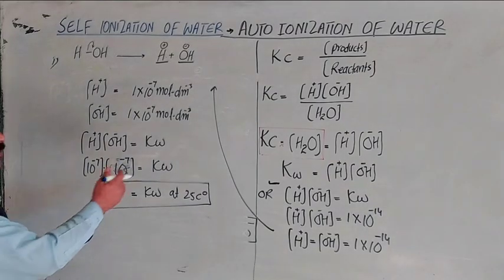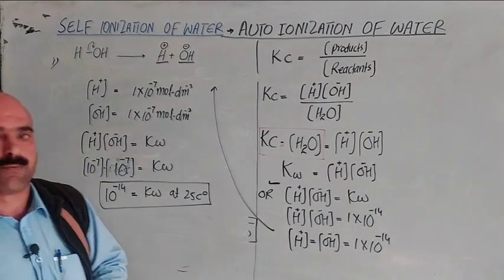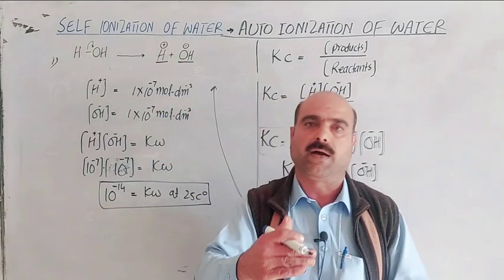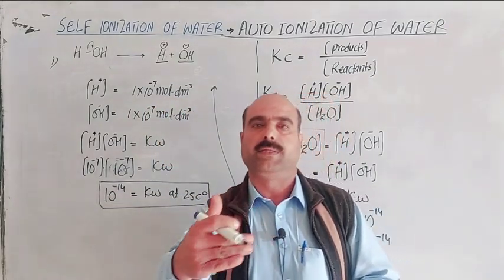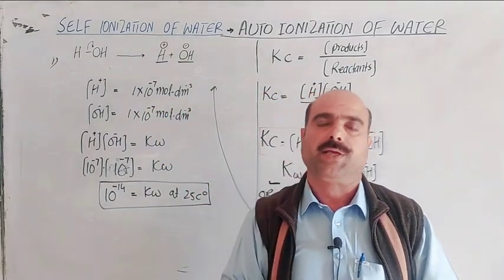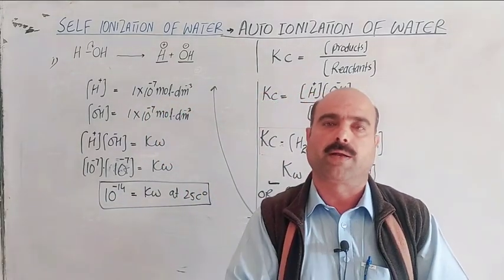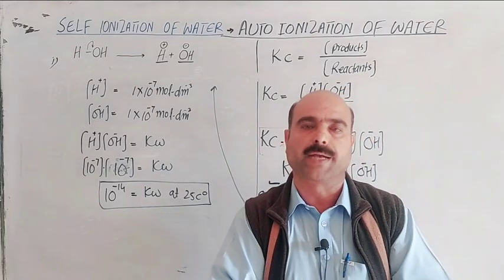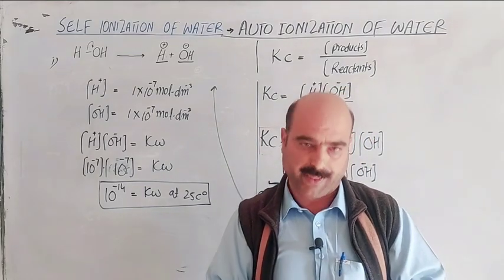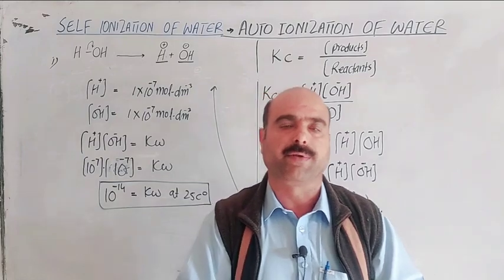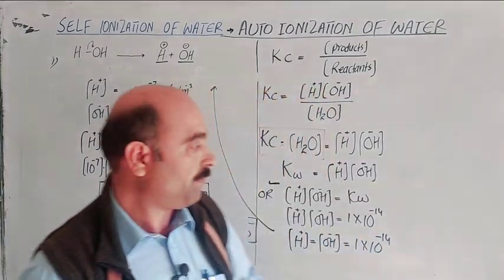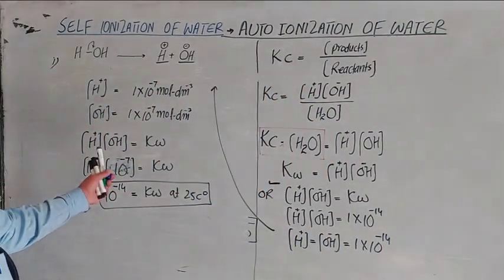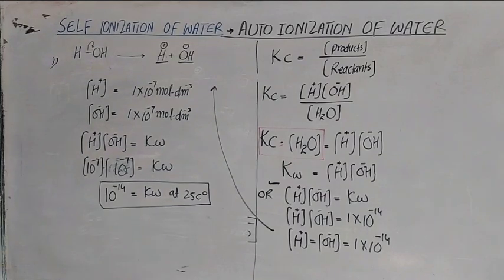These are all the key points about self-ionization of water: auto-ionization, the acidity and basicity of water, the fact that pure water does not conduct electricity, and that it is neutral to litmus paper. These were the derivations of self-ionization of water. Thanks a lot for watching the video.